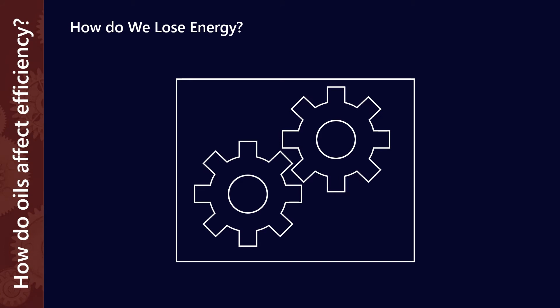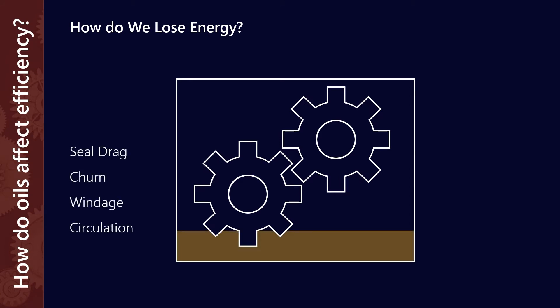As an example, we've got seal drag, so literally the drag on the seals. We've got churn, so that's moving lubricant around the gearbox casing. Most of these gearboxes are typically splash lubricated, so that means moving the lubricant around the volume. You've also got windage, which is literally just moving the air internally in the gearbox.